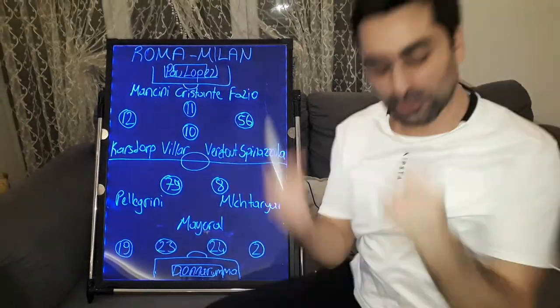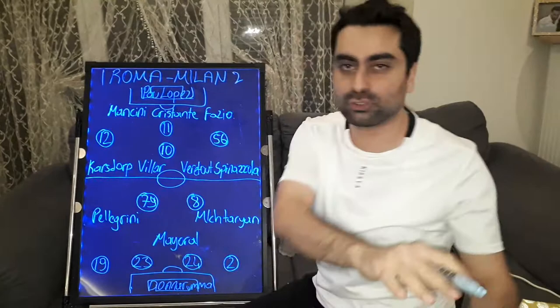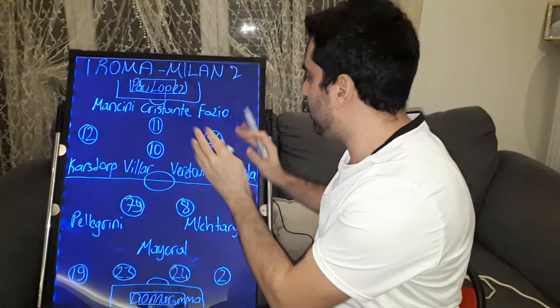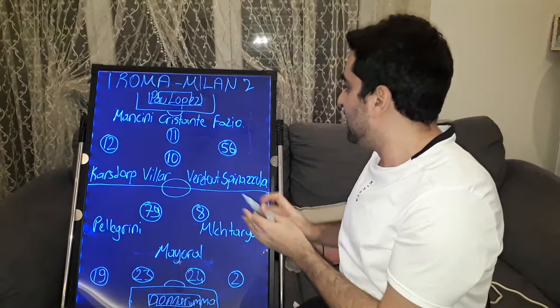Welcome to the Italian Football Lover Channel. Milan won 2-1 against Roma. I want to talk about the tactics and analysis of this game, starting with Roma's tactics. Roma played in Paolo Fonseca's classical 3-4-2-1 formation.